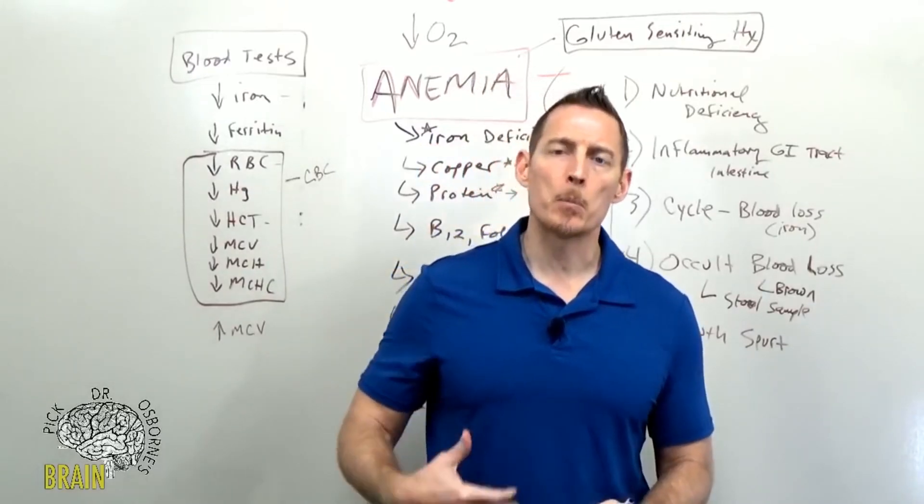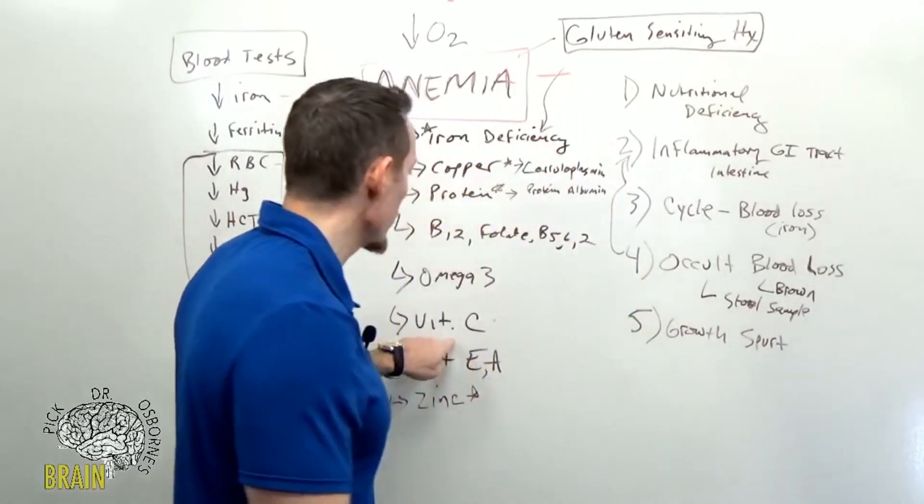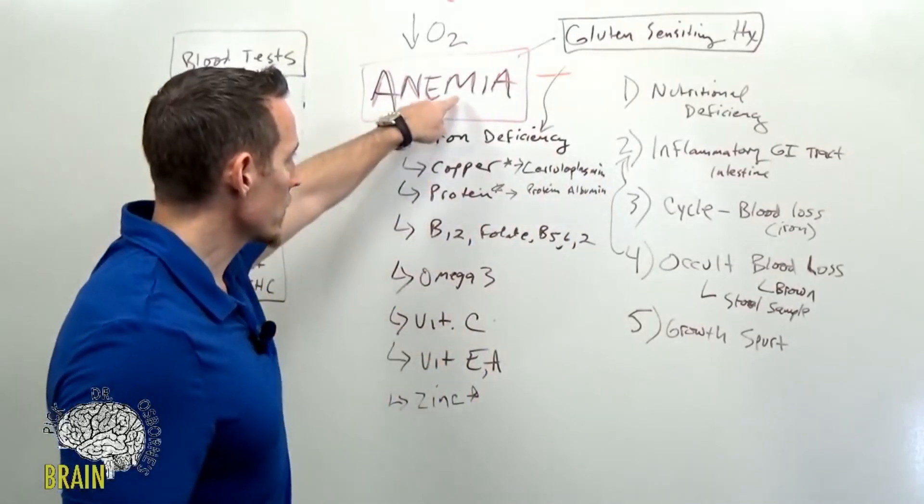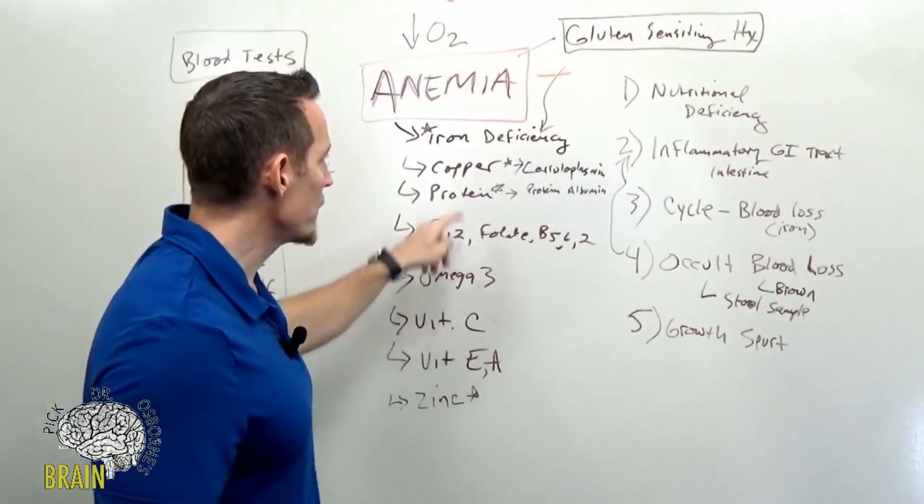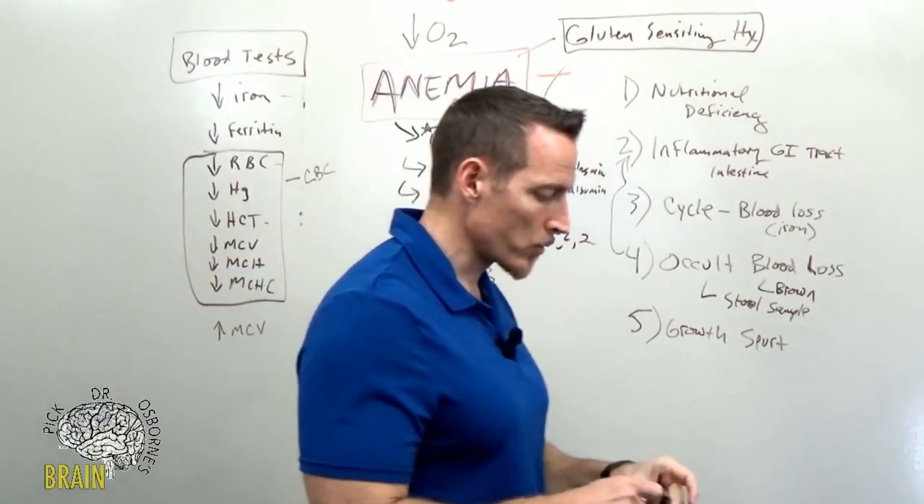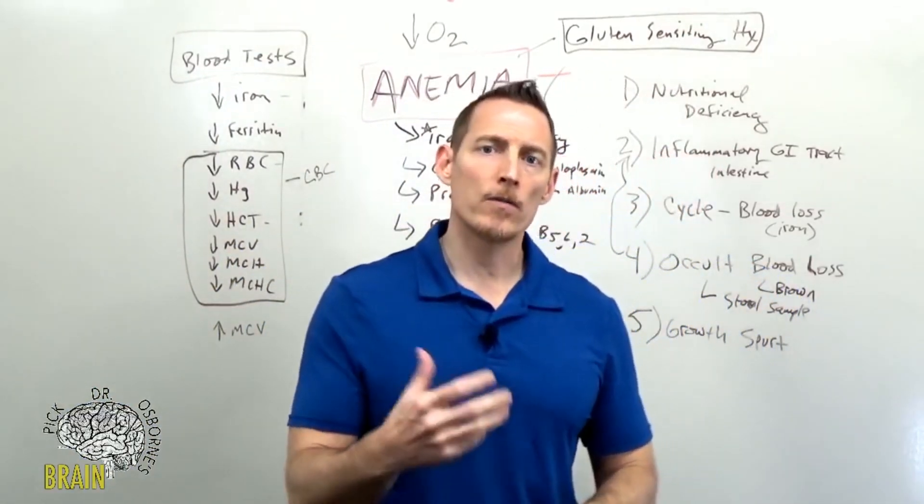We know that vitamin C improves the absorption of iron, which is one of the reasons why you see vitamin C on this list of causes, because vitamin C deficiency can reduce the ability to absorb iron from plant-based sources.